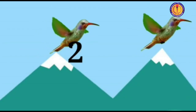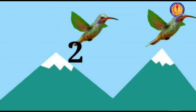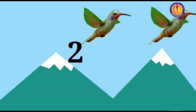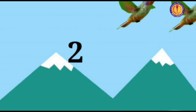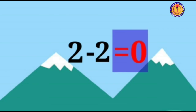You can see two birds over the hills. Both the birds flew away. Can you tell how many birds are left over the hills now? Two minus two is equal to zero. No bird is left over the hills now because both the birds flew away.